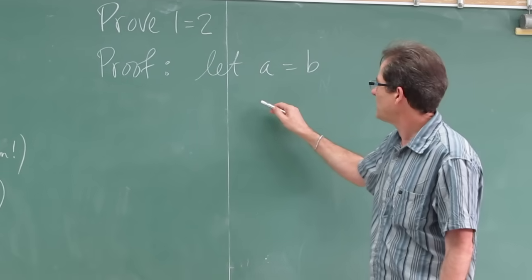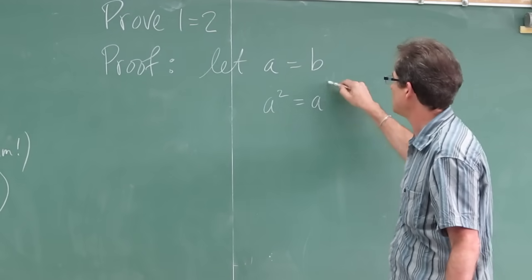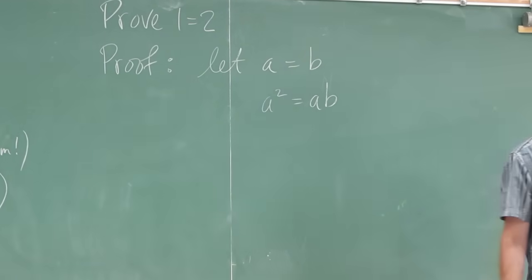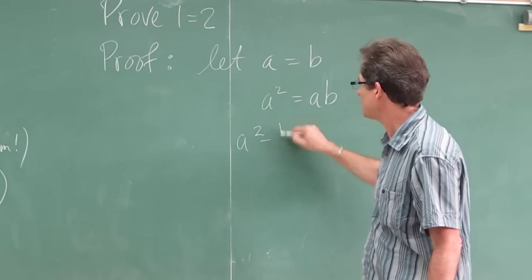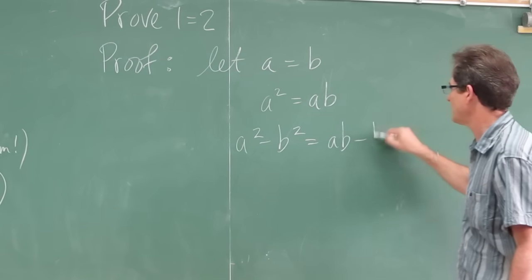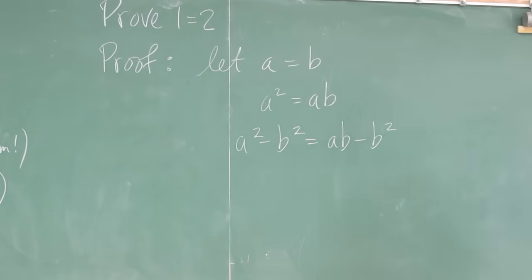Then, multiply both sides by a. You get a squared equals ab. Then, subtract b squared from both sides. All legal operations.